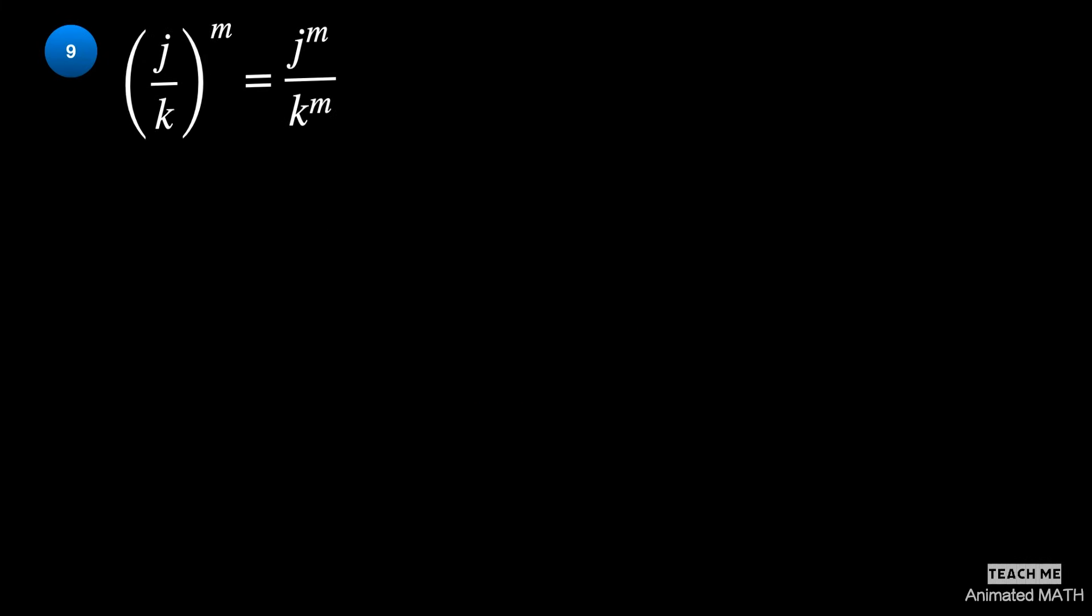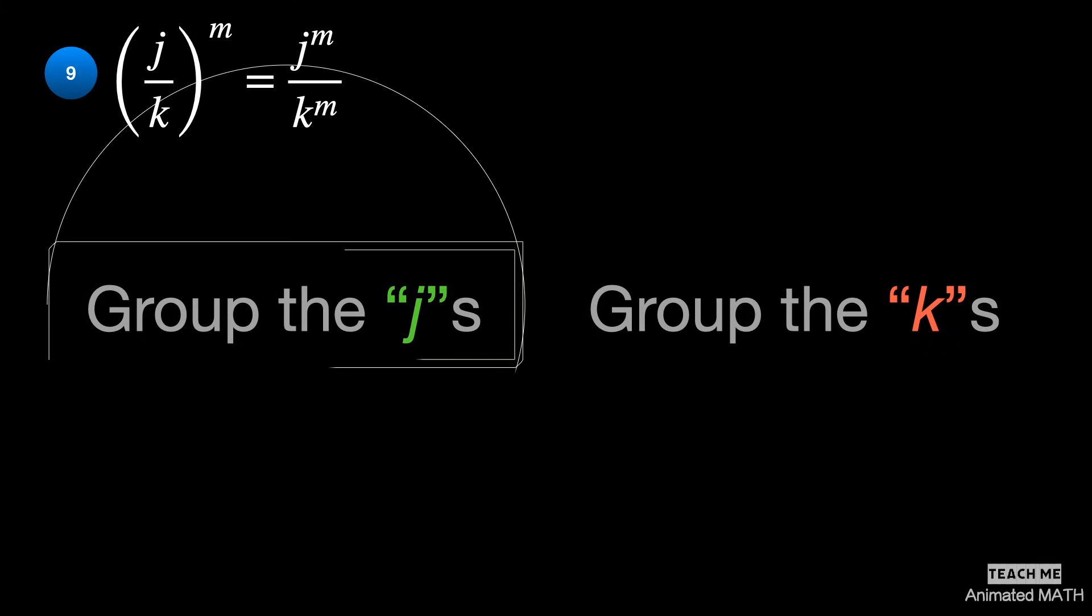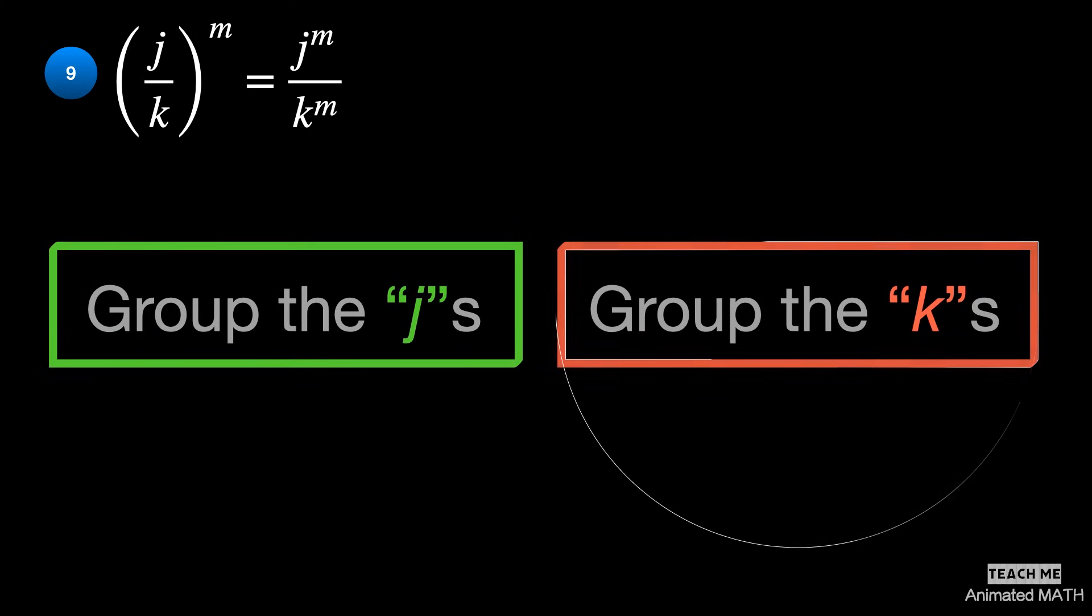The ninth property. Similar to the last example, this property is best shown by rearranging the j's and k's. Here is an example.